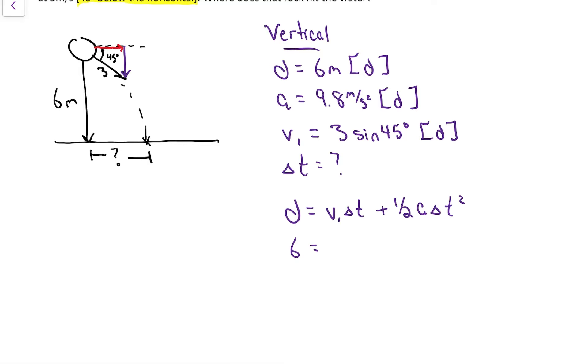3 sine 45 on my calculator I got 2.12 roughly, so 6 equals 2.12 times t. I'm going to do a step in my head: half of 9.8 is 4.9 t squared. So in standard form I get 4.9 t squared plus 2.12 t minus 6 equals 0.